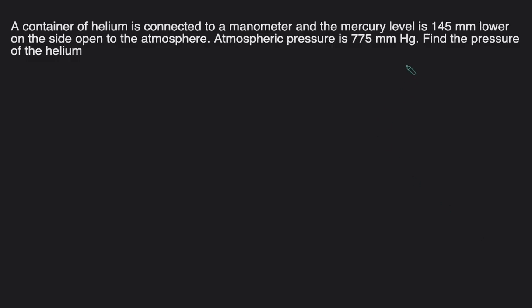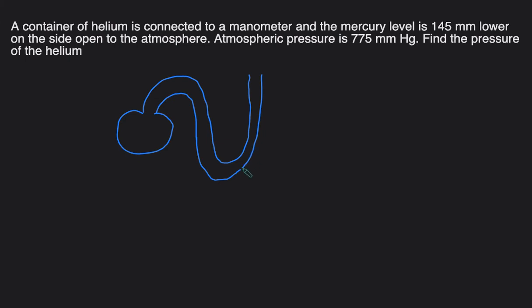Let's take a look at one final problem. This time we're not given a picture — just words. A container of helium is connected to a manometer, and the mercury level is 145 mm lower on the side open to the atmosphere, with atmospheric pressure at 775 mmHg. Drawing a generic manometer: the atmosphere side line is lower than the gas side line, and the height difference is 145 mmHg.